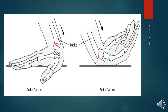The patient presents with pain, swelling, and tenderness over the wrist. Treatment is immobilization with splint or cast. In severe cases, closed reduction and surgery are performed.